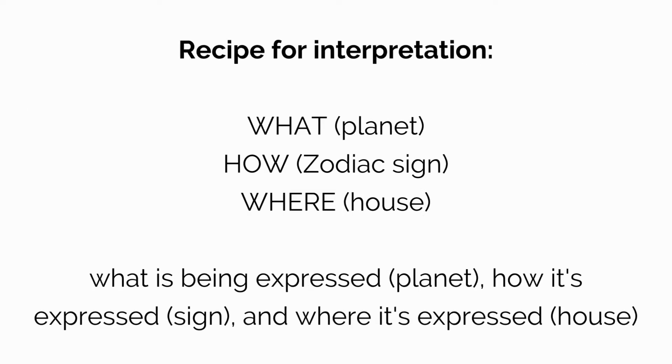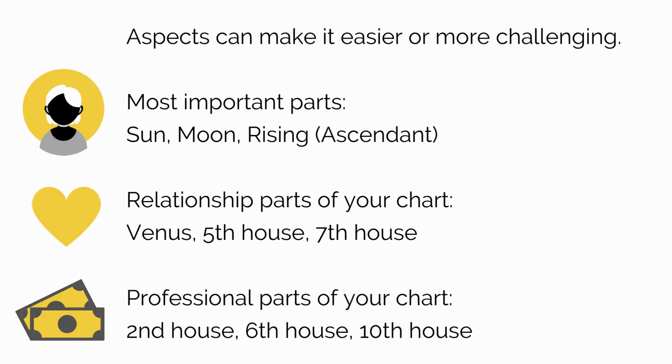Now the way basic interpretation breaks down is as follows: What is shown via planet, how is shown via sign, and where is shown via house. So your natal planet is what is being expressed. The sign it's in is how it's expressed, and the house it's in is where it's expressed. Aspects the planet makes can alter the way it operates, making it easier or more challenging.